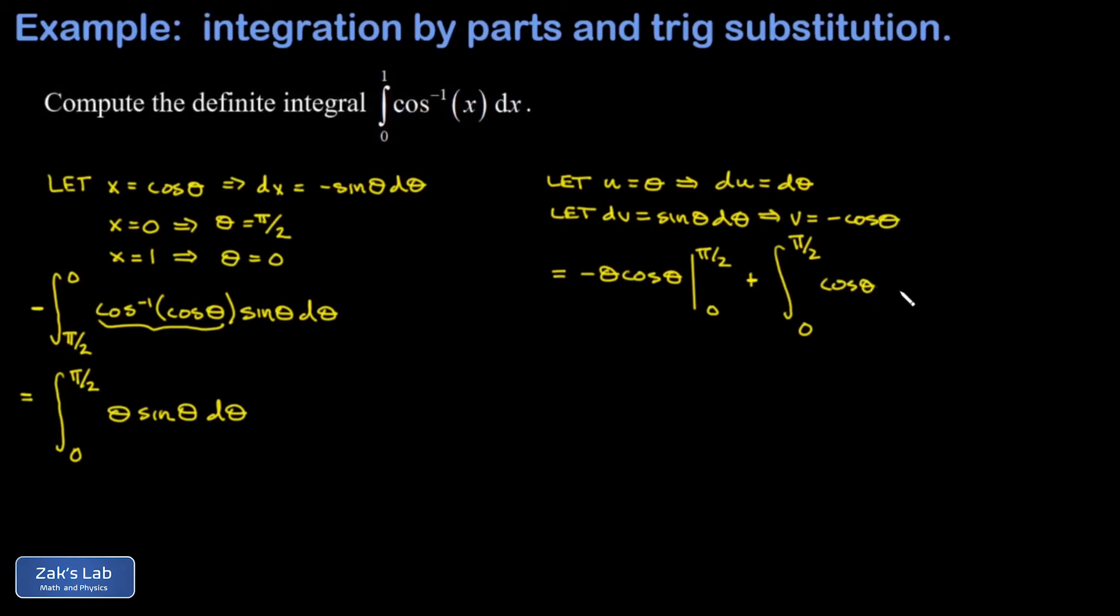And then du is just d theta. And I'll go ahead and evaluate the term on the left before I write down the next step. When I plug in pi over 2 for the upper limit the cosine of pi over 2 is 0. So that term vanishes. But when I plug in 0 for the lower limit theta is 0. So the term vanishes. So both of those terms are gone.